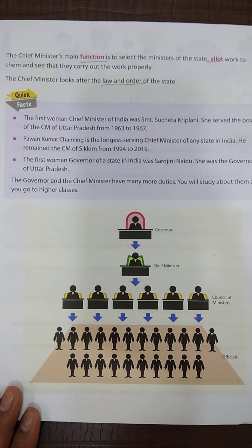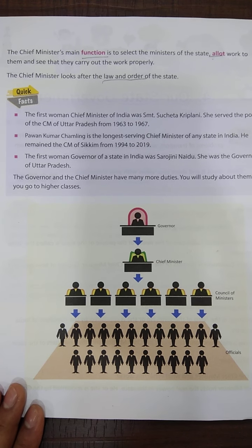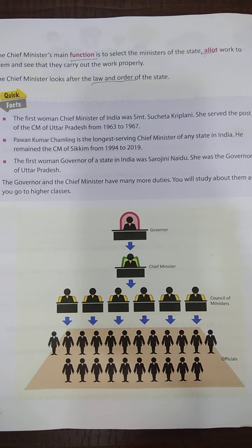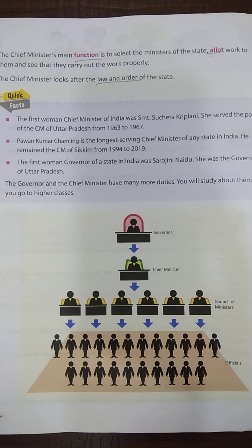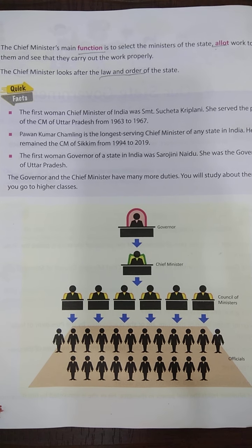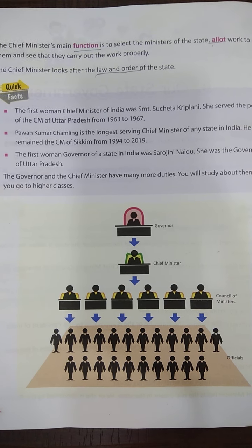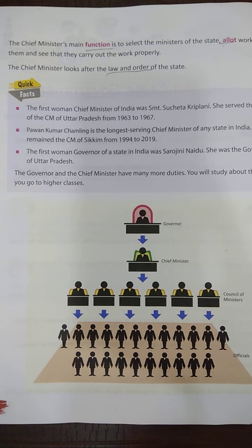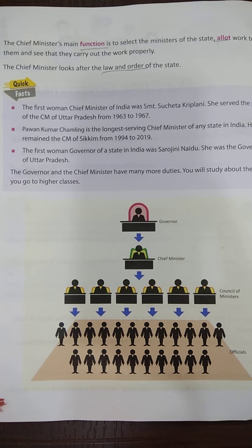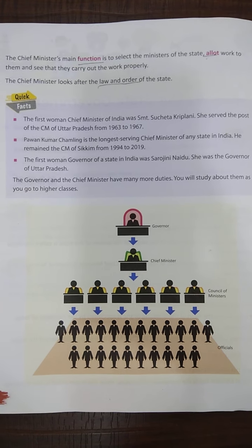The chief minister selects the people and then allots work to them and sees that all things and work are being carried out properly. The chief minister looks after the law and order of the state — to make sure that in that particular state, everything is going smoothly, discipline is maintained.